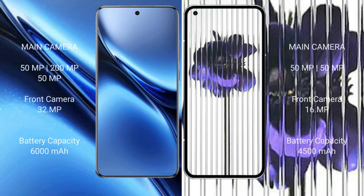Vivo X200 Pro has a rear triple camera setup: 50MP plus 20MP plus 50MP, and a 30MP front camera. Nothing Phone 1 has a rear dual camera setup: 50MP plus 50MP, and a 16MP front camera.